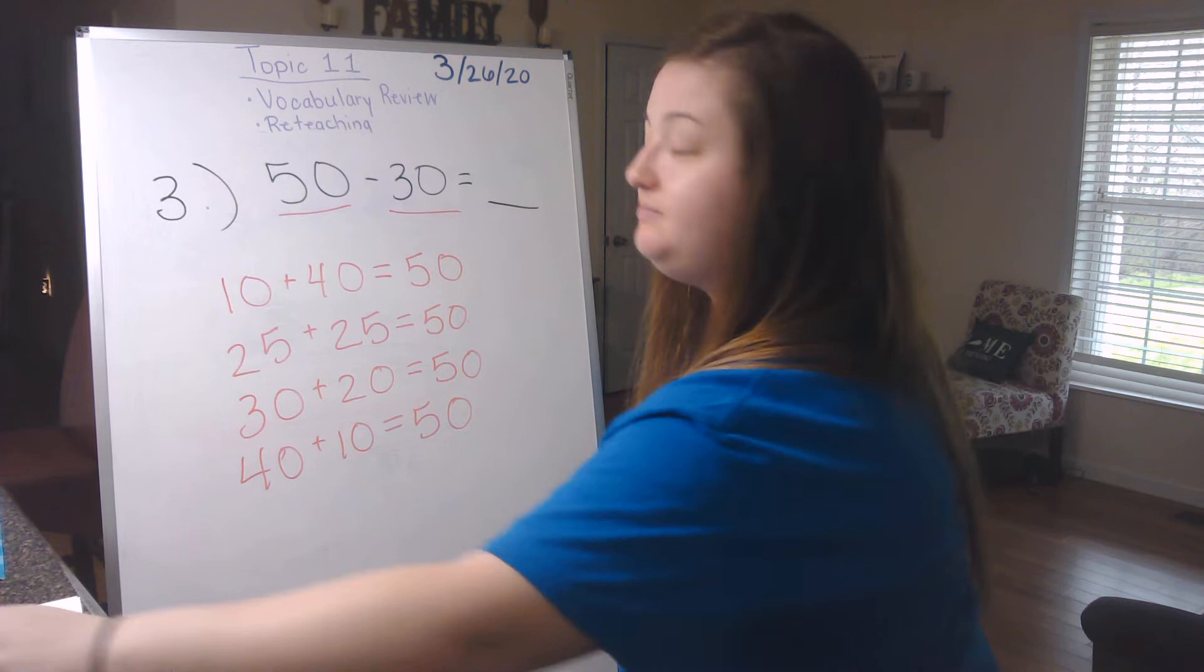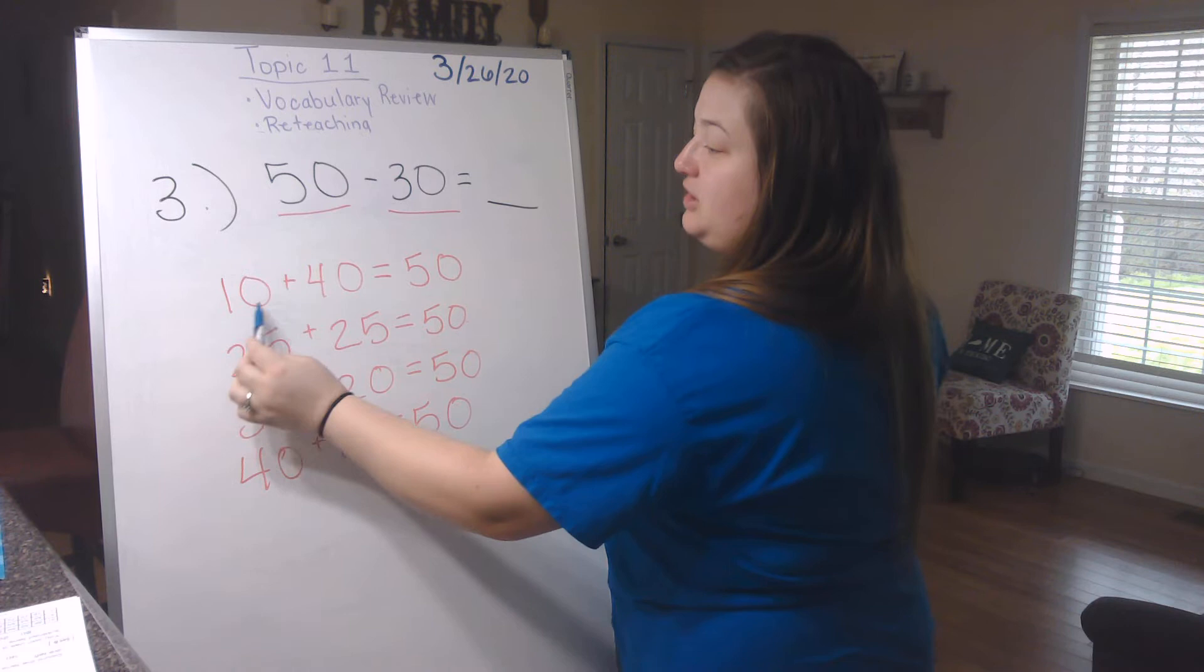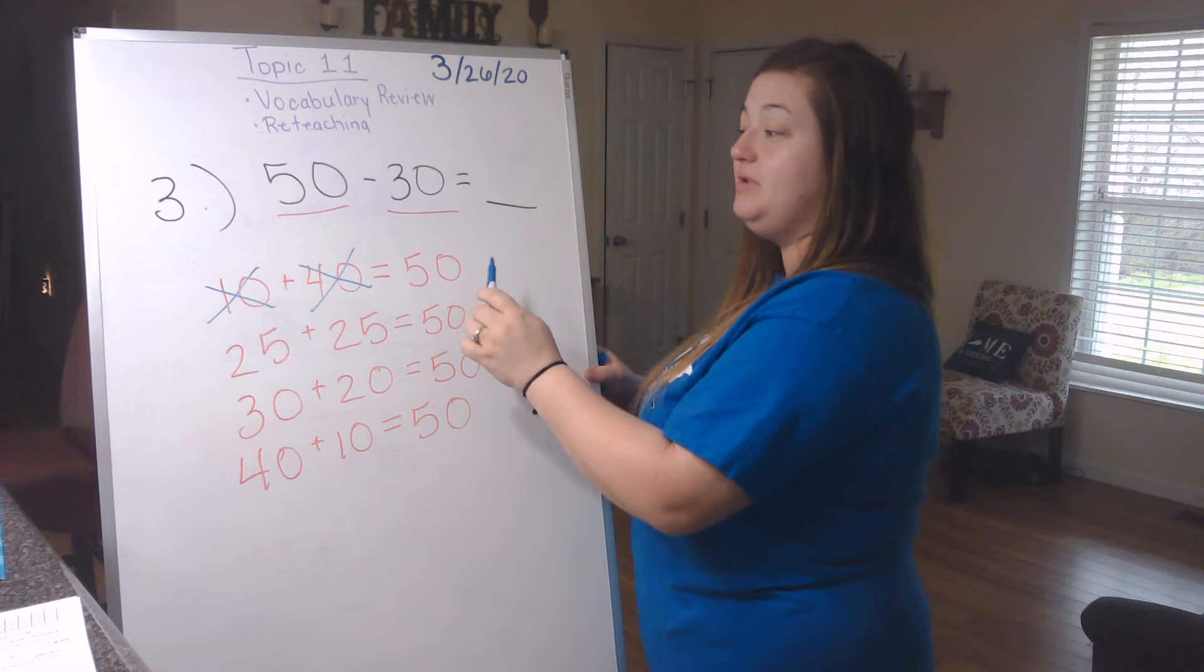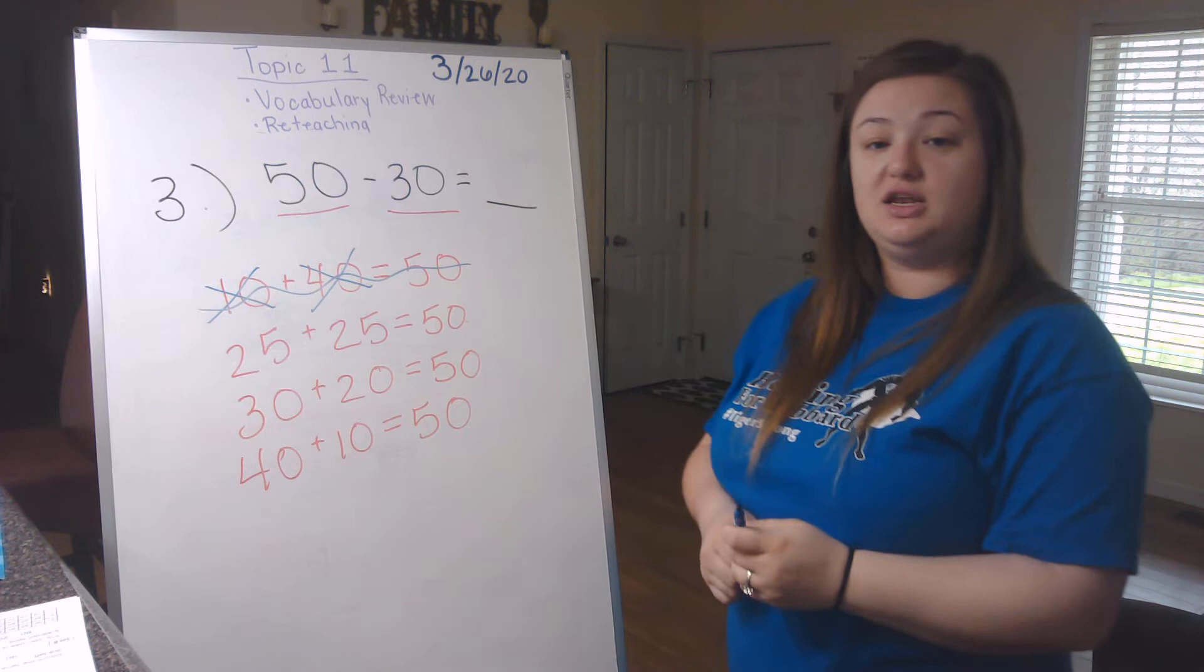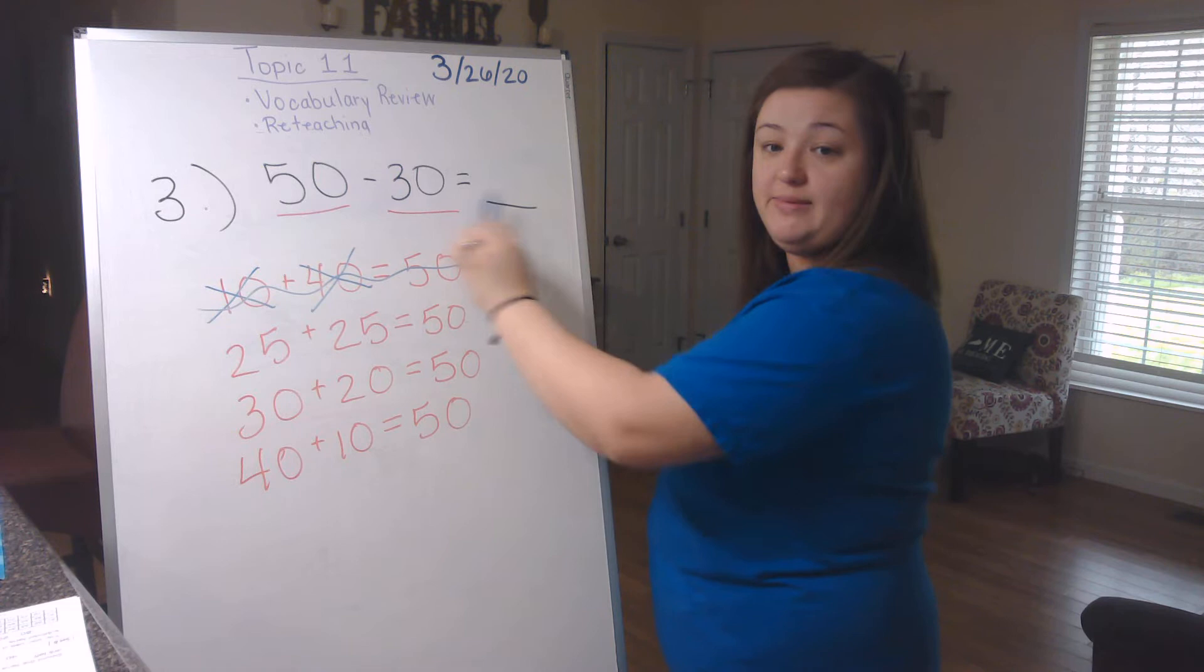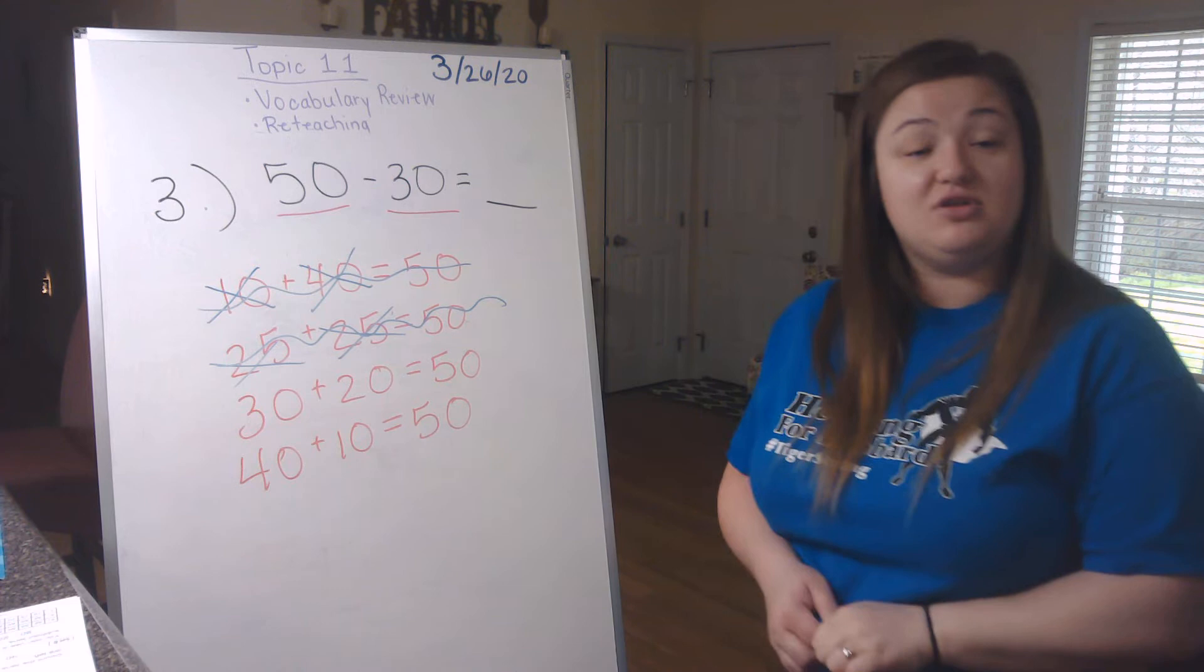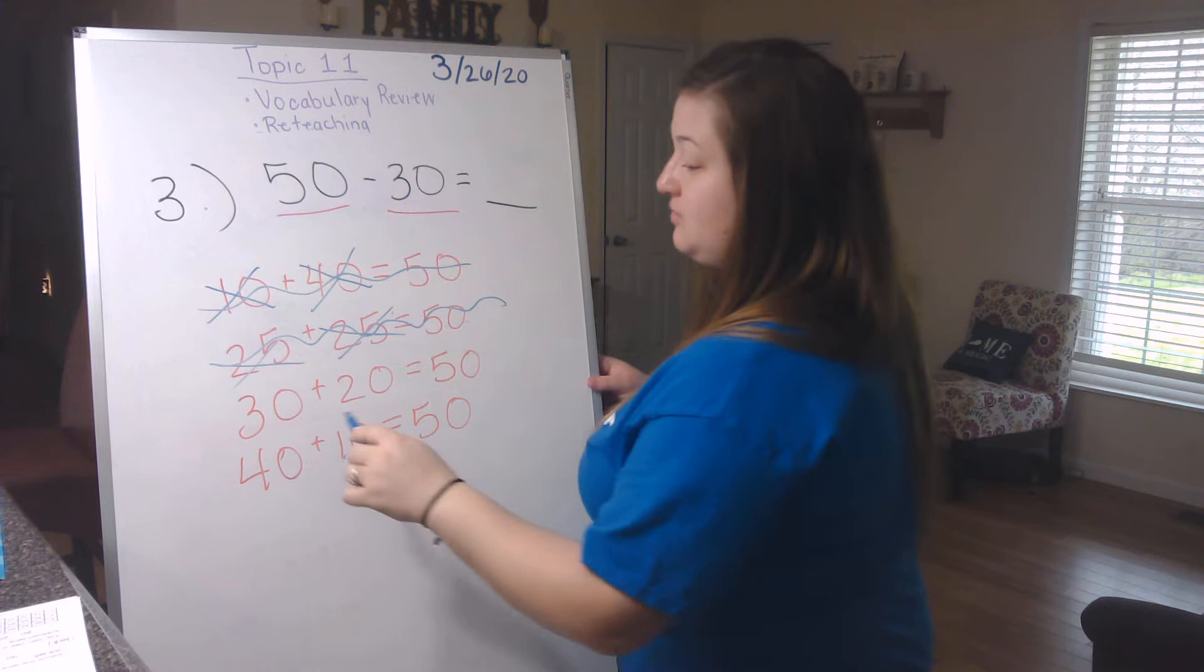Now we have to look at all of these problems and see which ones have the same numbers that's giving me my subtraction problem. Well, if we go on, let me get a different color marker so you guys can see. If I look at this first one, does this problem have a 10 in it? Nope. What about a 40? Nope. Okay, but it does have a 50. But since it didn't have the 30 in it, we can't use that one. So we know that one's not it.